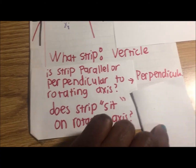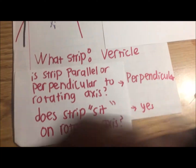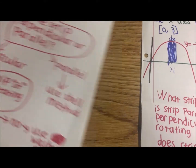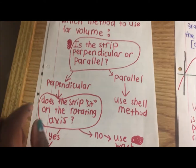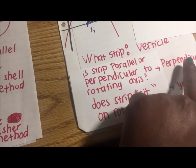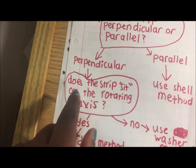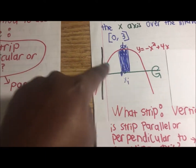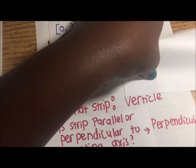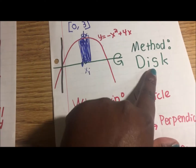Going back to our flowchart: the strip is perpendicular, and yes, it sits on the rotating axis. Therefore, we will be using the disk method.